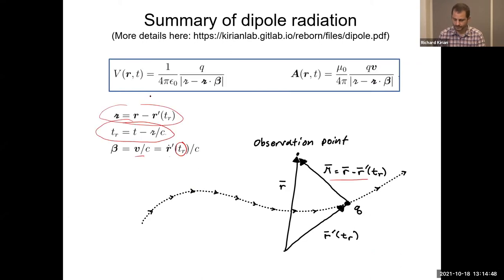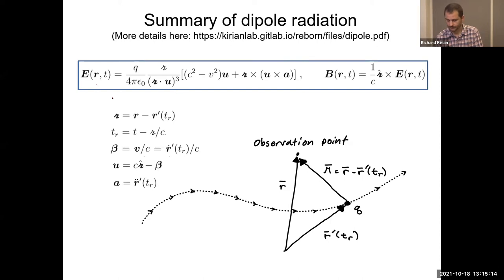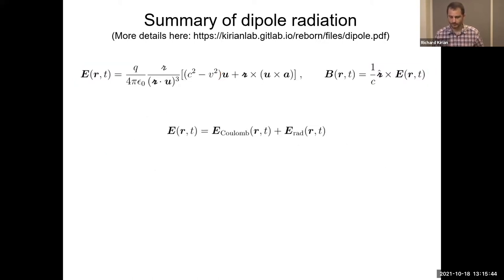From the potentials, we know how to relate them to the electromagnetic E and B fields. I wanted to show the full form of the E and B fields for a moving and accelerating point charge. These are the complete fields — they work for relativistic particles. There are two terms: there's an acceleration term and there's the vector u appearing here. Now we want to go into the dipole radiation approximation, so we'll go non-relativistic.